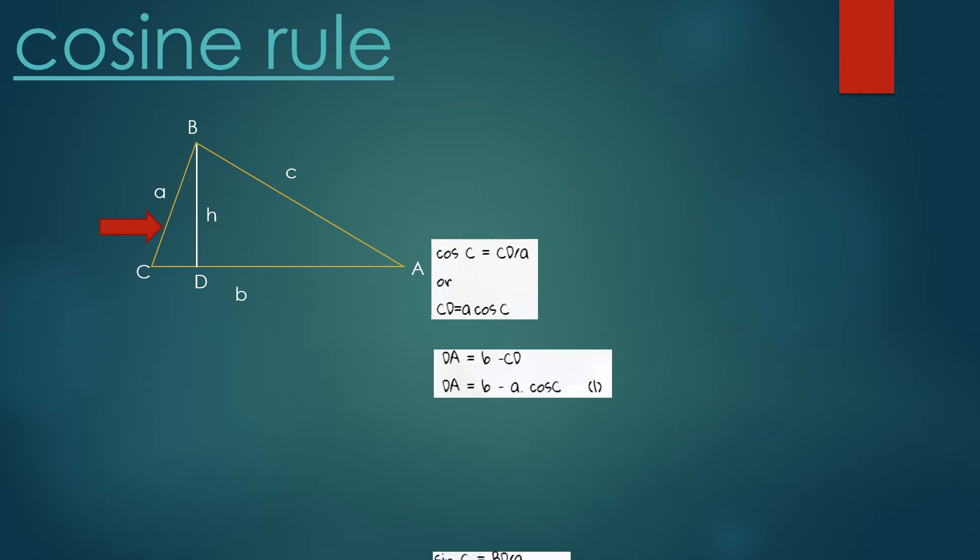Now look at triangle BCD. According to the sine definition, we have sin C = BD/a, where a is the hypotenuse. Or we can write it as BD = a sin C. We call this relation two.